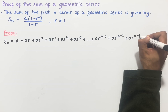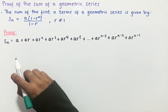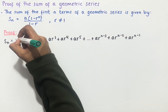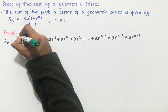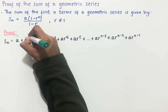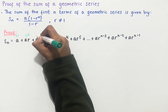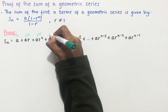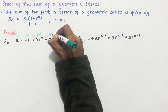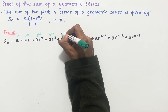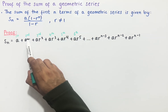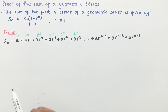The series continues to ar to the power of n minus 1. To help us spot the pattern, we can see that a is the first term, ar is the second term, ar squared is the third term, ar cubed is the fourth term, and so on. Now if we think about the position and the power of r, there is a nice relationship that we can see.